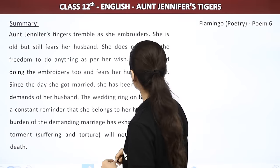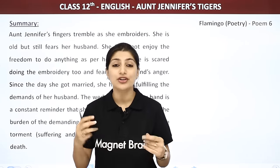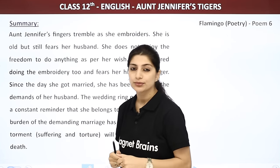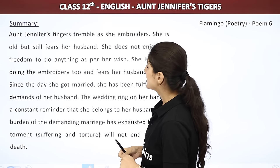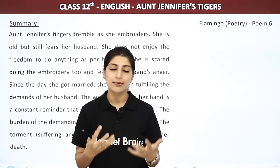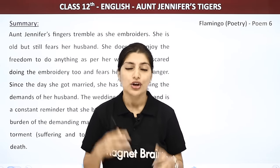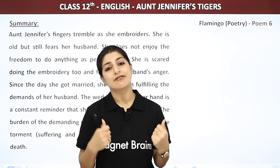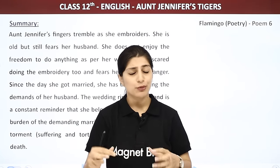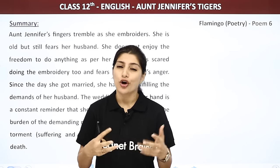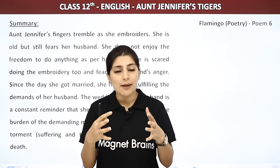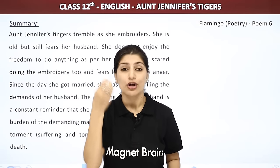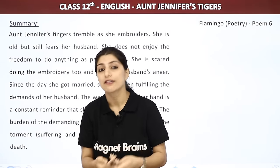Aunt Jennifer's fingers tremble as she embroiders. Aunt Jennifer ki jo fingers hain woh tremble karti hain, kaanp rahi hain jaise woh embroidery karti hain, tiger ko bana rahi hain. Kyun? Woh itni umar ki ho gayi hain, lekin phir bhi apne husband se bahut dar lag raha hai. Ungli isliye kaanp rahi hai kyunki unhe dar hai ki uncle aa jayenge aur dekhenge ki woh apna time waste kar rahi hain, ghar ka koi kaam nahi kar rahi. Also, unki ungliyon ne poori zindagi itna kaam kiya hai ki ek chhoti si needle bhi — jis se woh cloth ko bahar nikal rahi hain — unhe bahut bhaari lag rahi hai, kyunki unki fingers bahut zyada weak ho gayi hain.